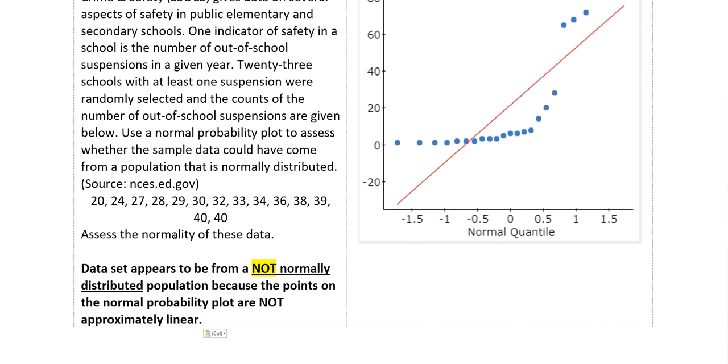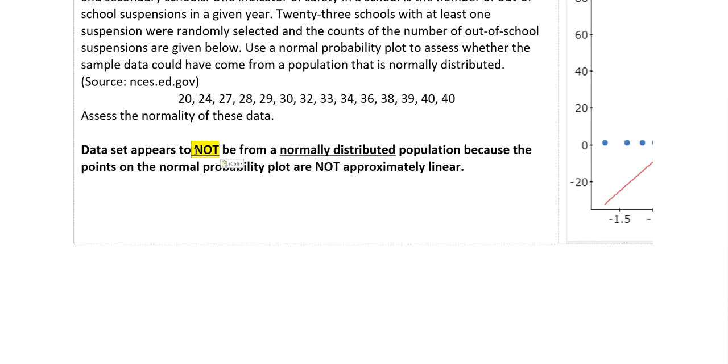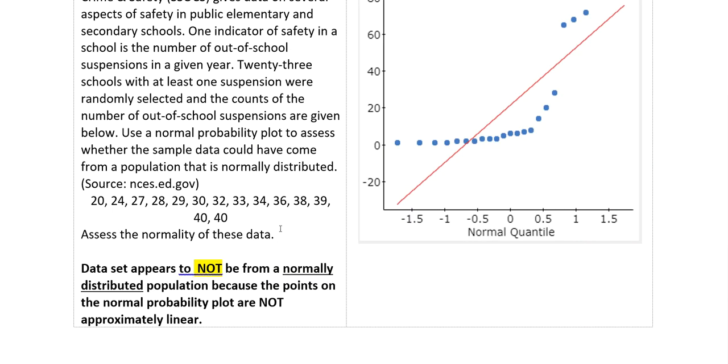It's a little awkward to write, but I wrote that the dataset appears to be from a not normally distributed population because the points on the normal probability plot are not approximately linear. You could say the dataset appears to not be from a normally distributed population. That might be a little bit better English for it. But of course, that's going to make my graph freak out. There we go. To not be from a normally distributed population because the points on the normal probability plot are not linear.